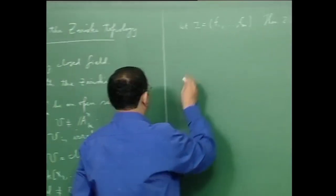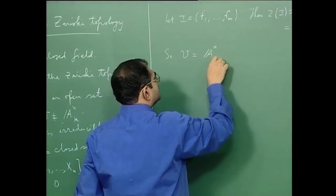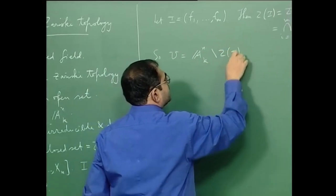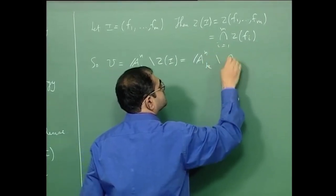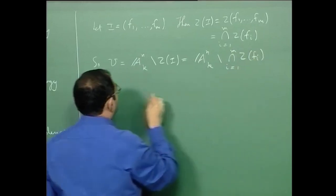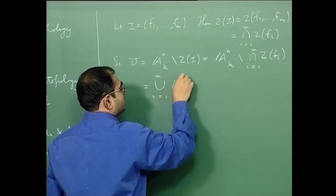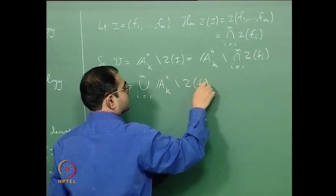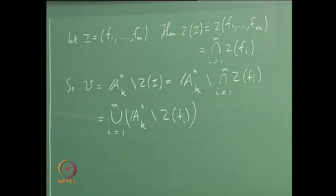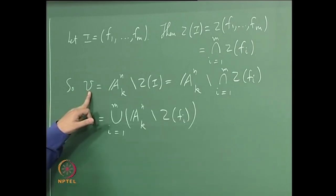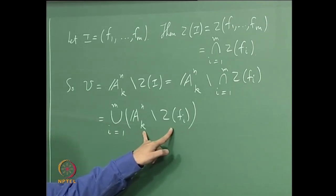What does this tell us about U? U will be the complement of Z(I), and by De Morgan's laws this is the union from i=1 to m of A^n \ Z(f_i). This expression shows that any non-empty non-trivial open set can be written as a finite union of open sets of this special type.